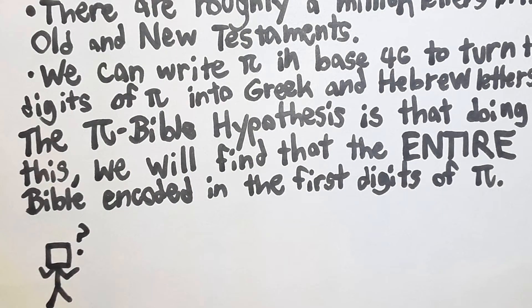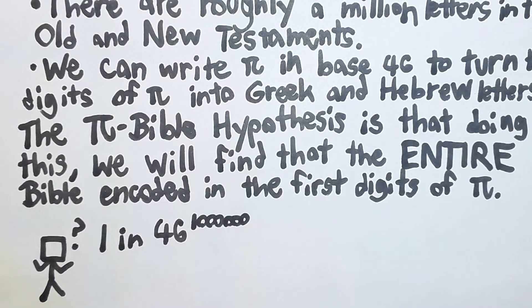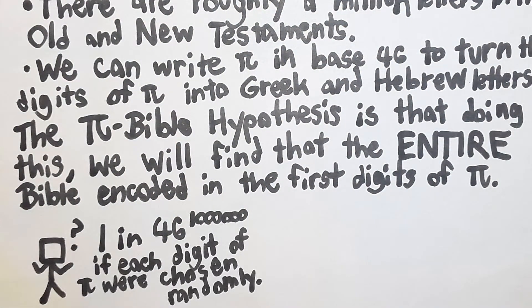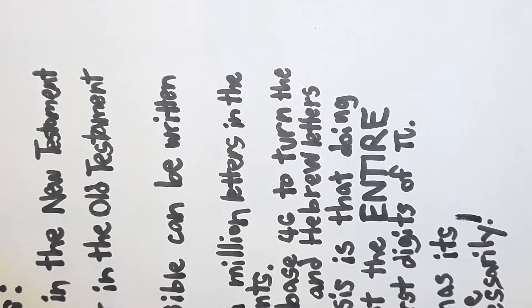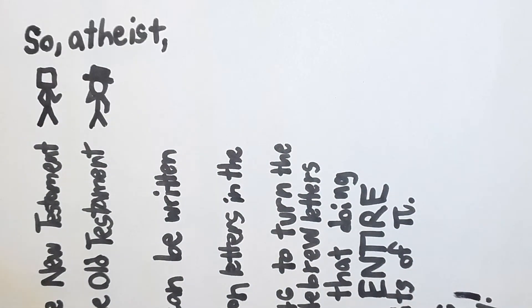Is the Pi Bible hypothesis true? I don't know. I haven't checked. It probably isn't. The chance of that happening if the digits of pi were chosen randomly would be 1 in 46 to the power of a million. However, the number pi has its digits necessarily, not randomly. So, atheists, you're probably like me and haven't checked to see if the Pi Bible hypothesis is true.